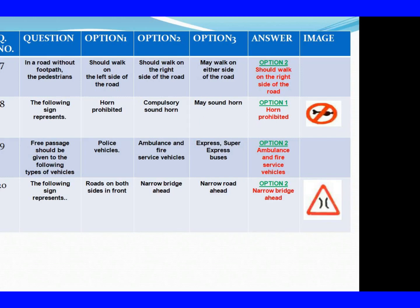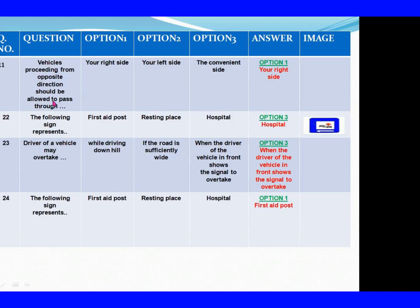Question 19: Free passage should be given to the following types of vehicles. Option 1: Police vehicles. Option 2: Ambulance and fire service vehicles. Option 3: Express, super express buses. The right answer is Option 2: Ambulance and fire service vehicles. Question 20: The following sign represents. Option 1: Roads on both sides narrowed. Option 2: Narrow bridge ahead. Option 3: Narrow bridge ahead. Question 21: The vehicle proceeding from the opposite direction should be allowed to pass through. Option 1: Your right side. Option 2: Your left side. Option 3: The convenient side. The right answer is Option 1: Your right side.